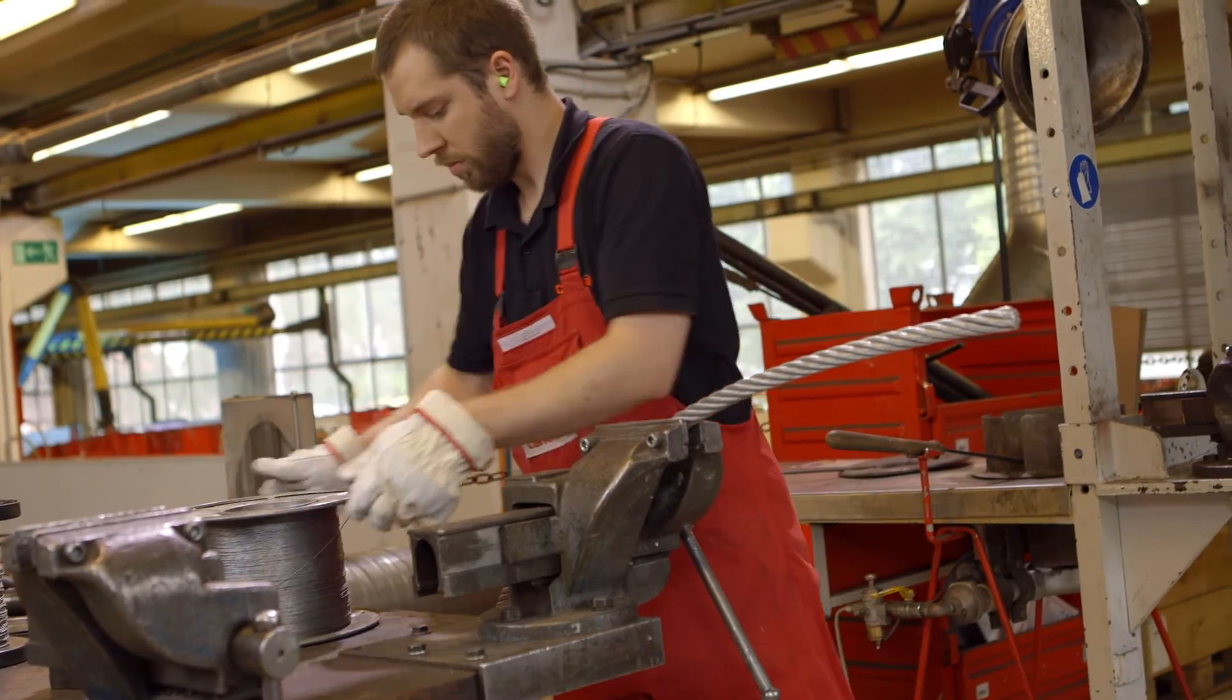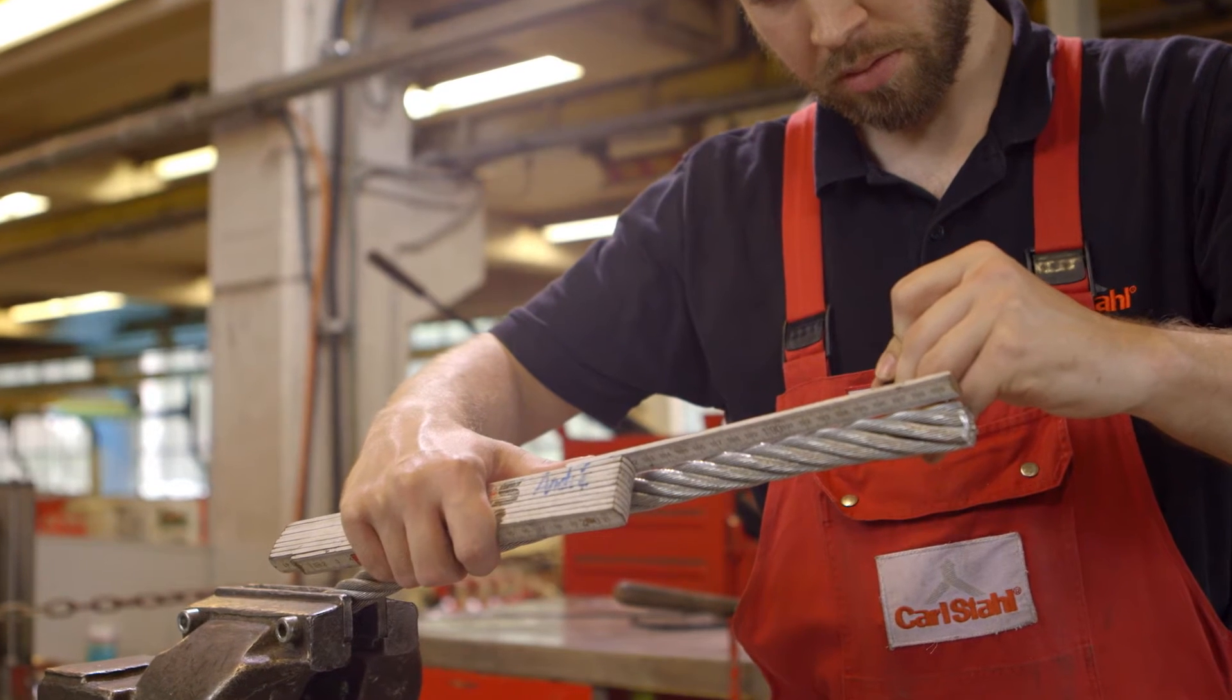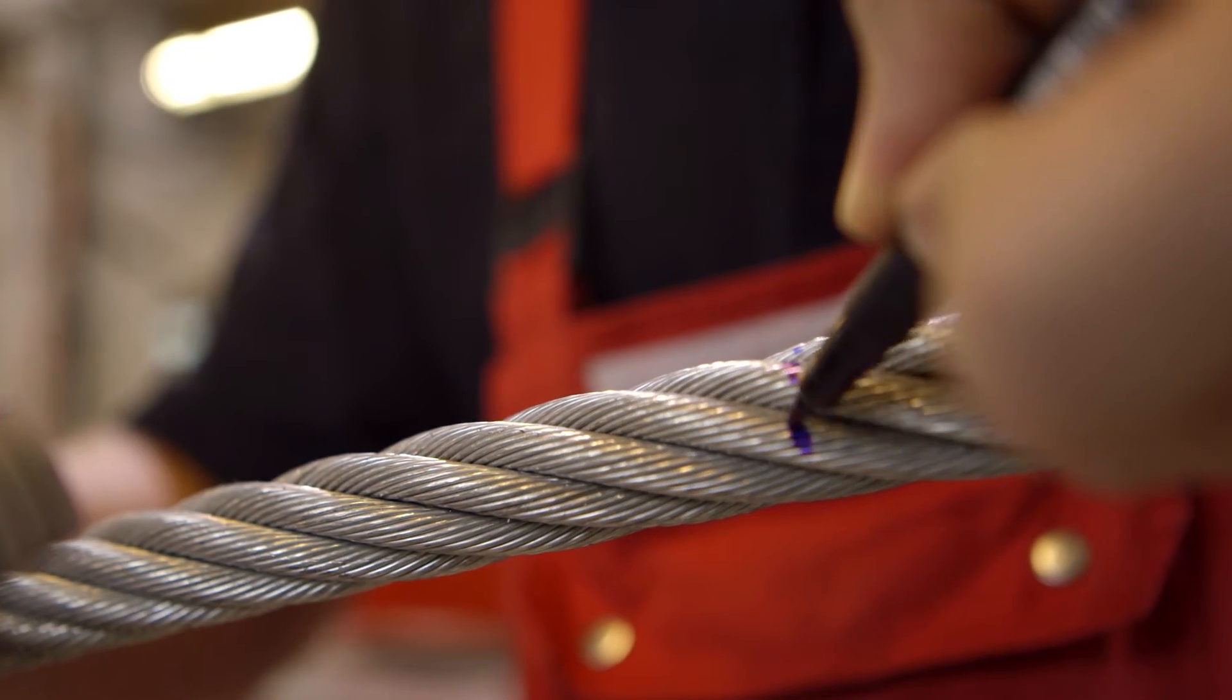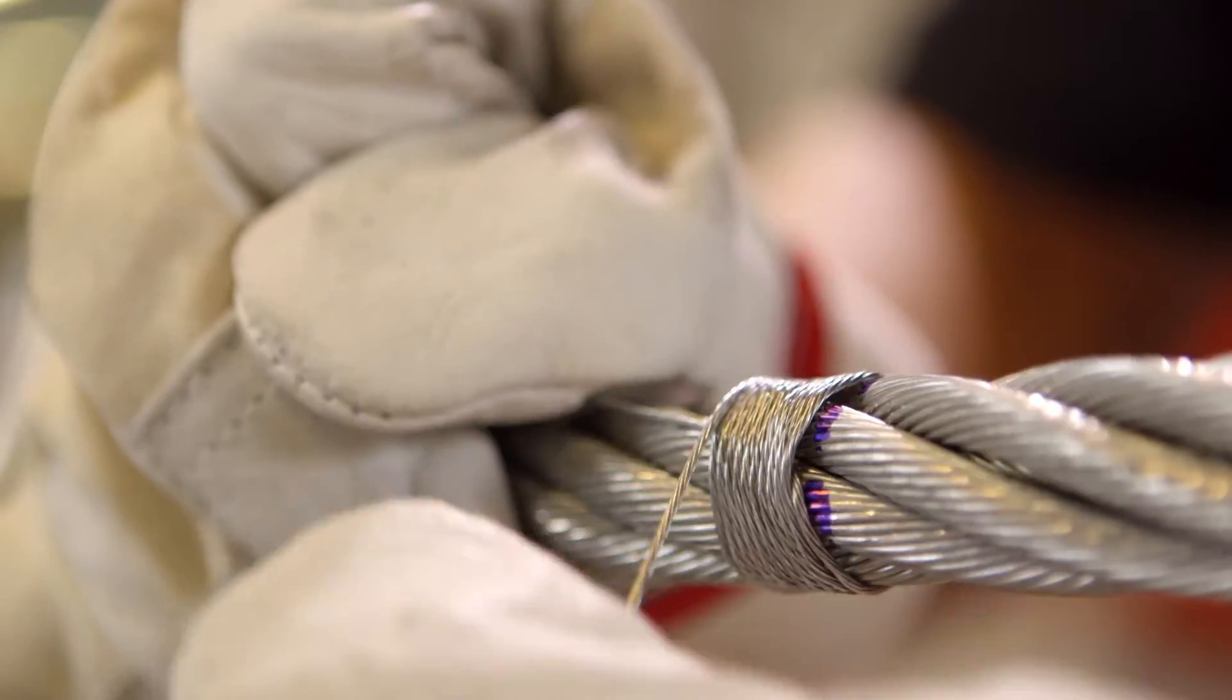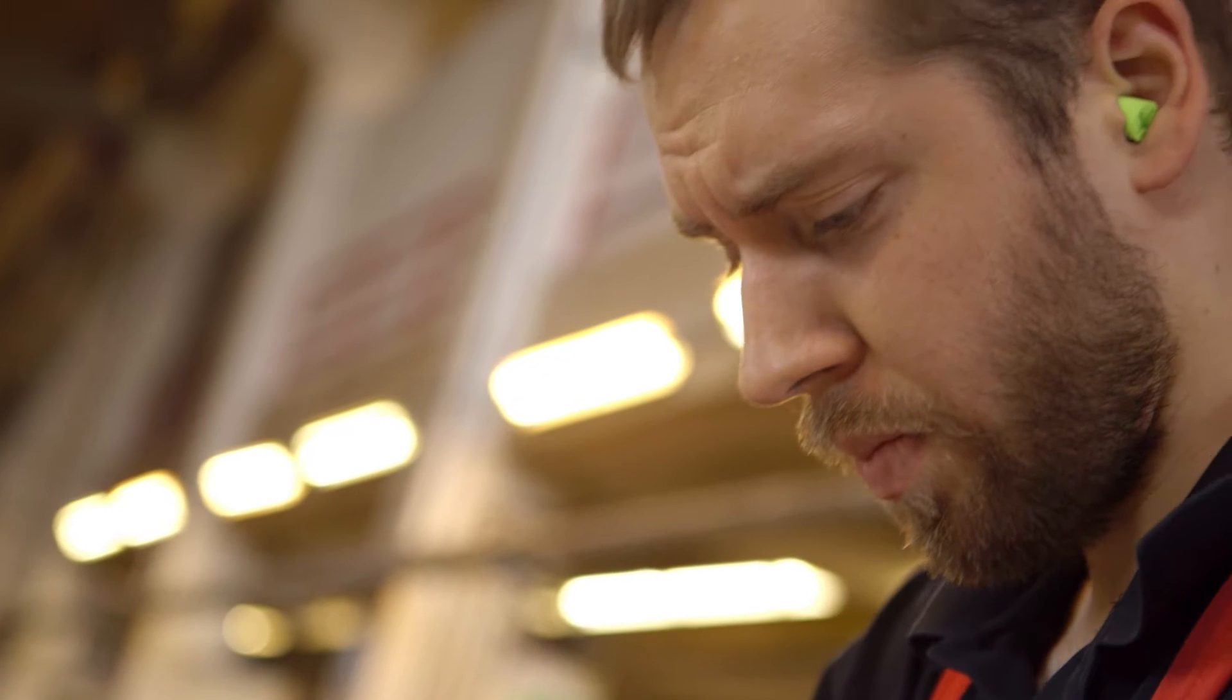In the first step for the Rope Spelter Socket, the Carl Stahl rope maker places wire coils to prevent the unintentional untwisting of the rope. For this procedure, the rope maker measures the precise distances, cuts defined lengths of wires and binds them around the wire rope. This procedure requires precision and takes approximately 30 minutes.